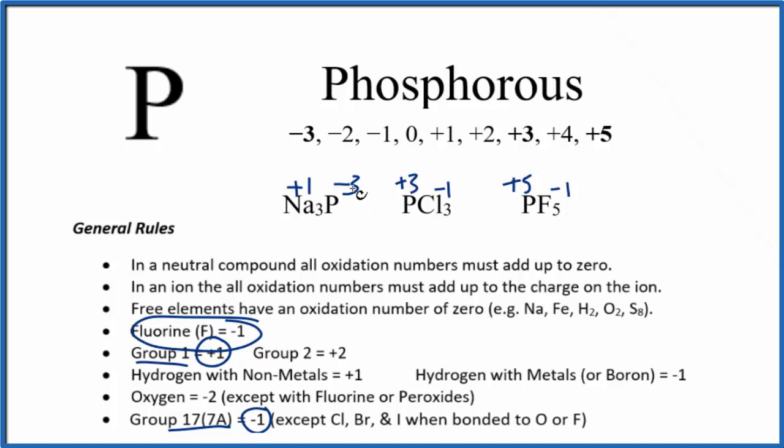If we have phosphorus just by itself or P₄, the oxidation number will be zero because it's a free element. This is Dr. B with the oxidation numbers for phosphorus. Thanks for watching.